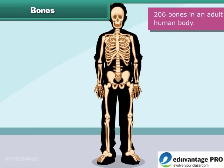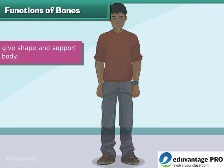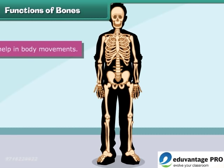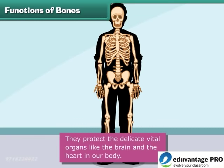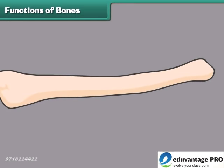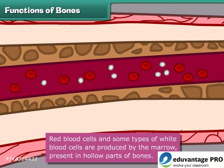What functions do bones perform? Bones give shape and support to the body. They help in body movements. They protect the delicate vital organs like the brain and the heart in our body. Red blood cells and some types of white blood cells are produced by the marrow present in the hollow parts of the bones.